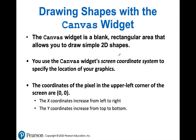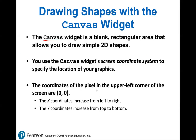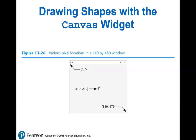The last topic we're going to cover is drawing shapes with the canvas widget. The canvas widget will create a blank space for you to draw your shapes. If you just call the canvas widget by itself, a rectangle is going to be displayed in front of your screen. The way you draw shapes is by using the coordinate system — X and Y.